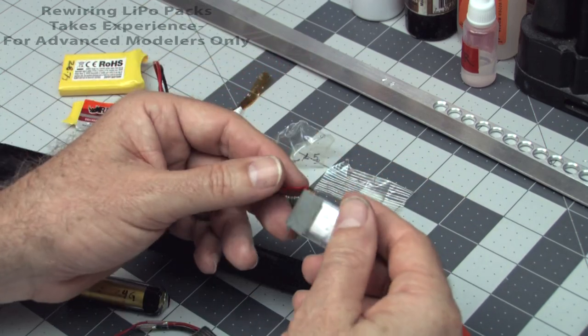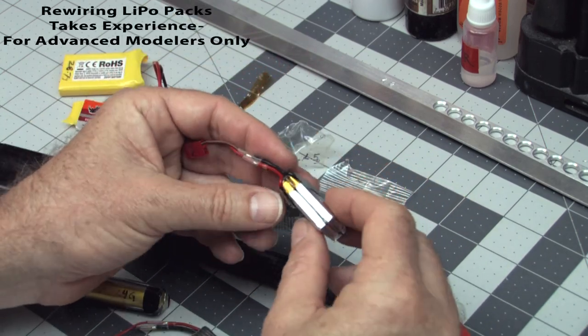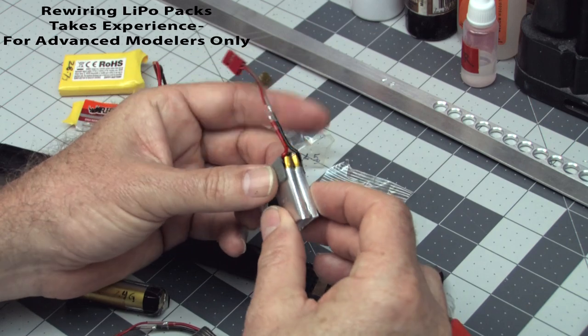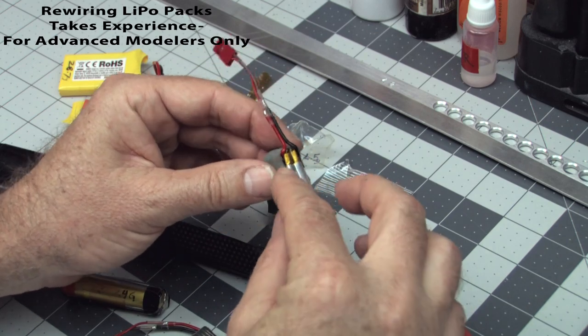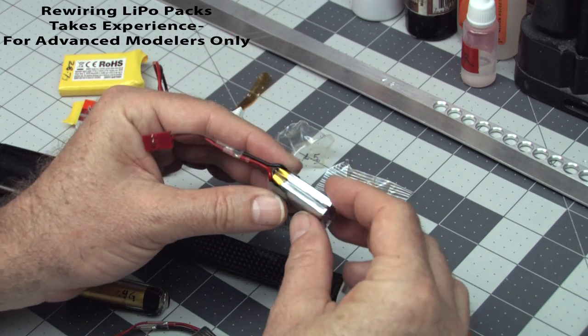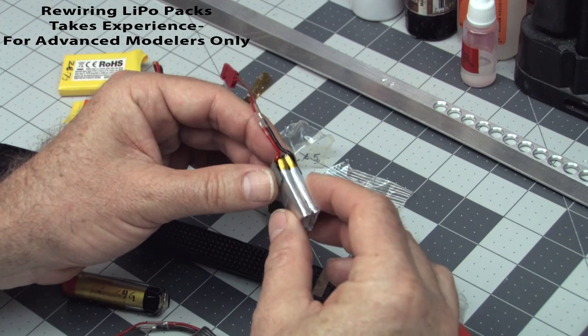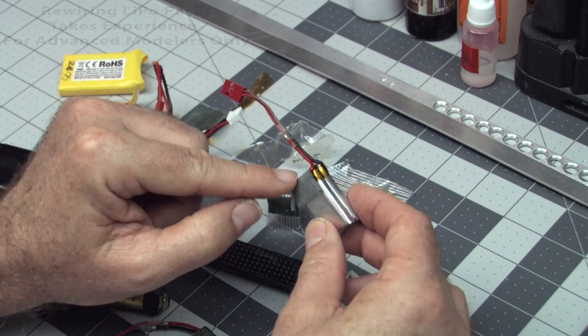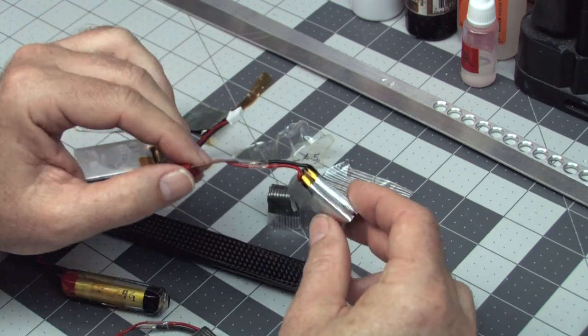You've got to be really careful with these. You're dealing with a lot of energy even though these are pretty small packs. You don't want to short them out. And if you're not into doing fine work in electronics maybe you don't want to attempt this. But these packs are pretty easy to disassemble and to convert them from a 2S to a 1S. So let's check out how to do it.